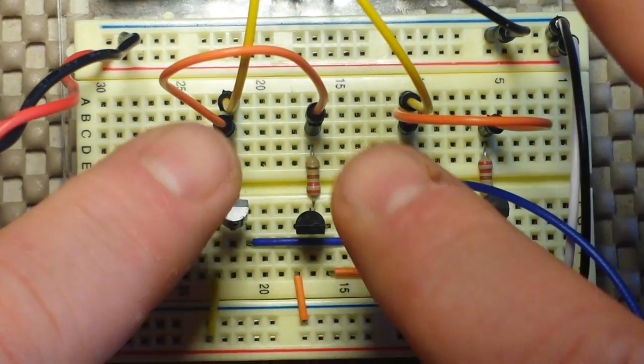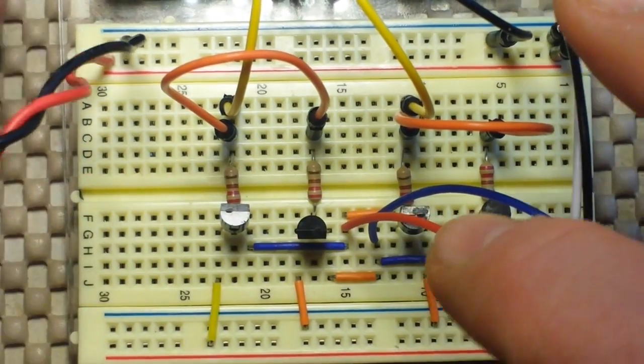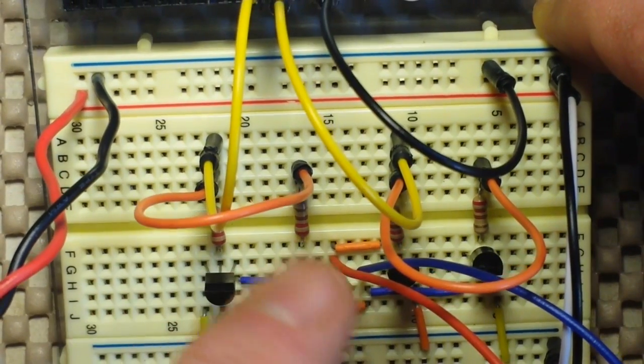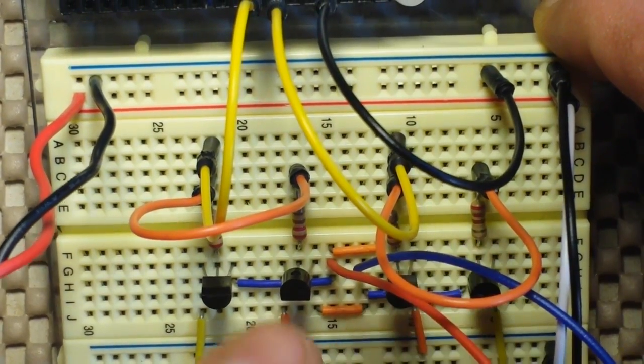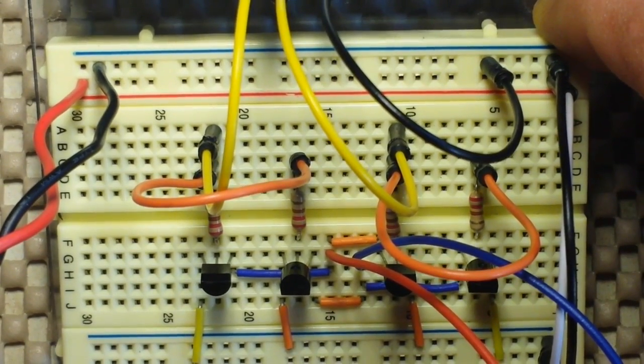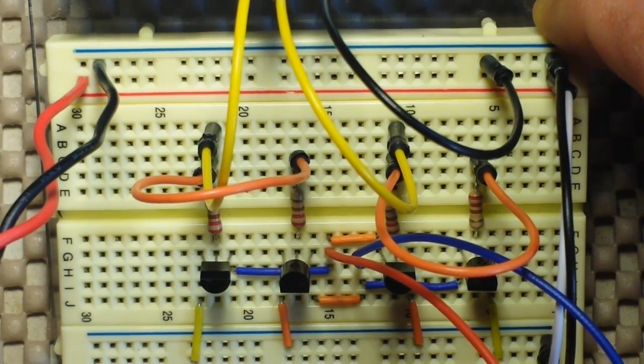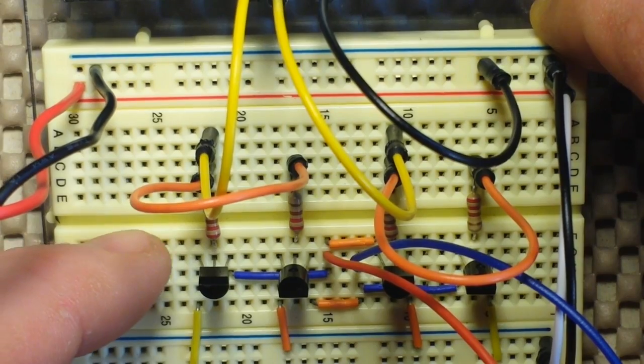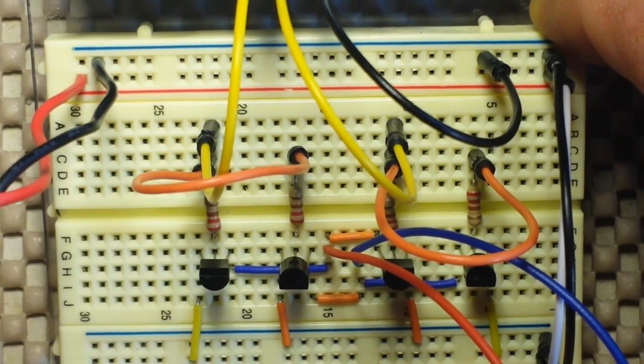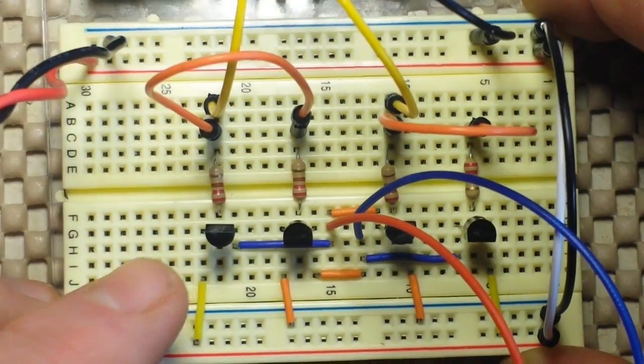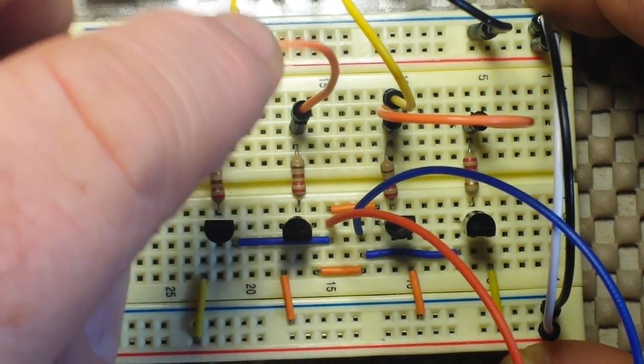The input from our Arduino is of course coming to the base of the transistors because that's our switch. The base, a current at the base, opens up the transistor and allows current to flow from the collector to the emitter.